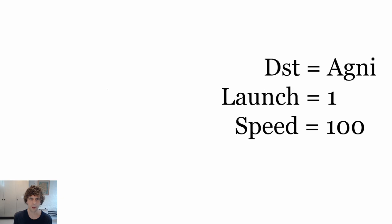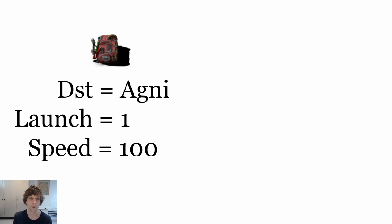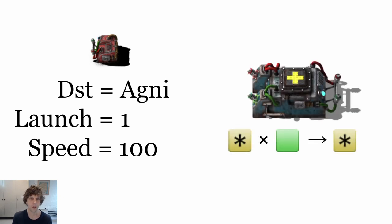Now that we have that one green signal when we want to launch, we need to use signal expansion to create the three different launch signals that we need. To do this we're going to set up each signal that we want to send in a constant combinator. Then we're going to use an arithmetic combinator to multiply each input signal by green and then output each one. In the case where we're not outputting a green signal, this is a multiplication by zero, so the combinator won't output anything. When green is one, it'll output exactly what the constant combinator is saying. This is a neat way of doing this rather than having to have multiple combinators.